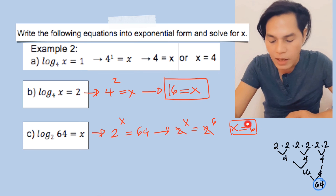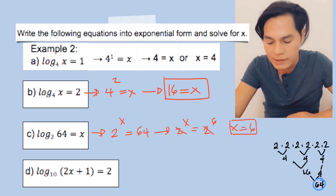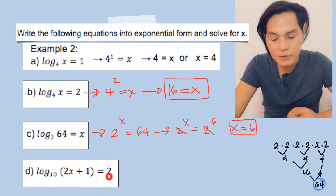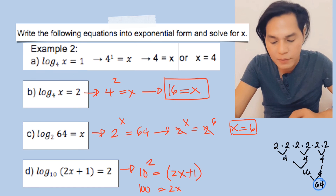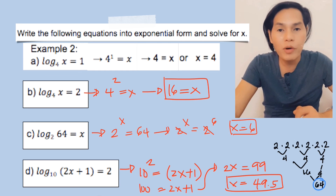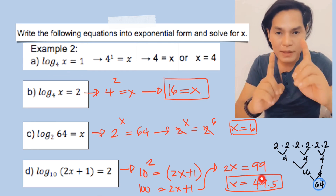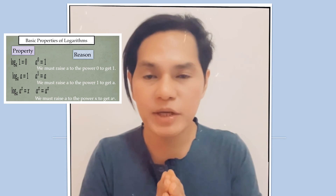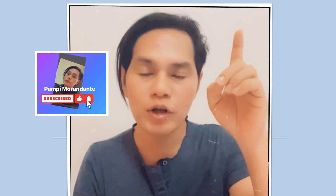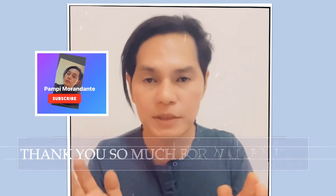For letter d: the log of (2x + 1) to the base 10 is equal to 2. Change it into exponential form: 10 to the power of 2 equals 2x + 1. Solving algebraically, x equals 49.5. That's all about the basic concept and properties of logarithms. Up next is the laws of logarithms — thank you so much for watching, bye!